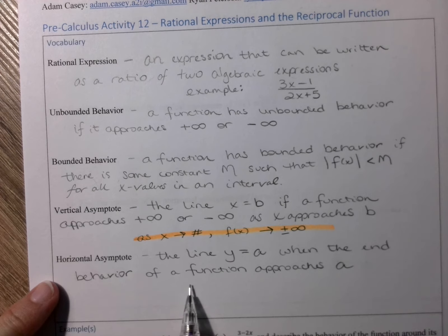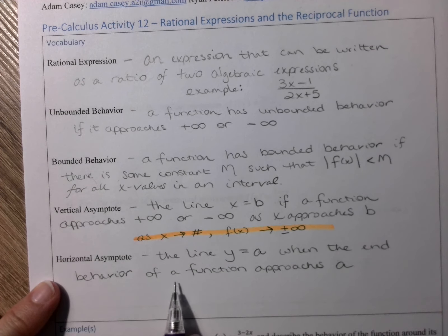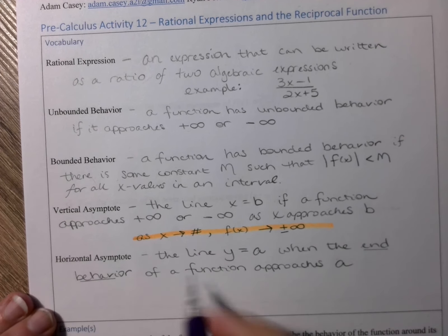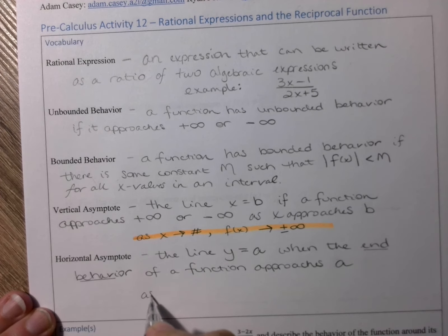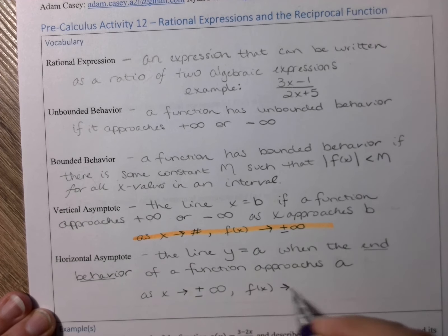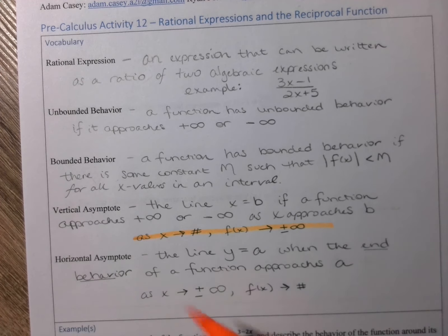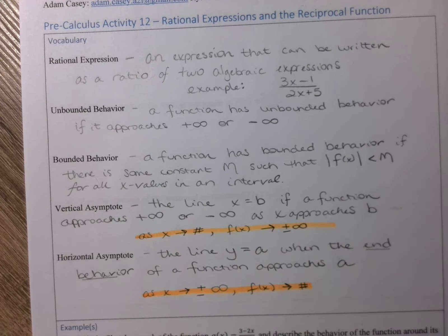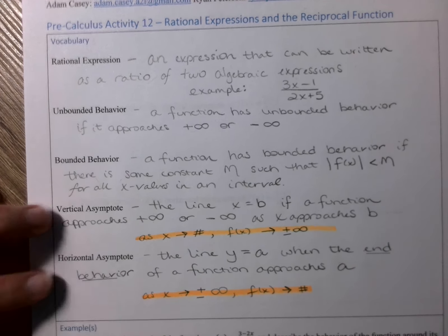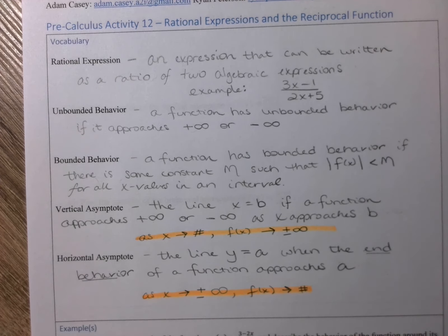On the horizontal asymptote, x is what's going to infinity — we're talking about end behavior. As x goes to positive or negative infinity, f of x, the function, is approaching some number. It's a really important distinction that we need to make sure we understand the difference between those two asymptotes.